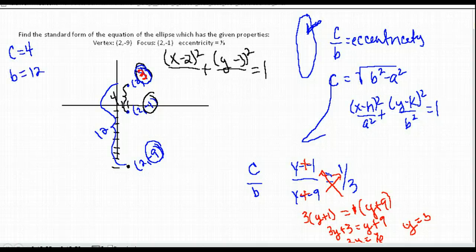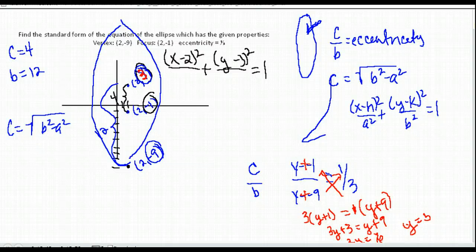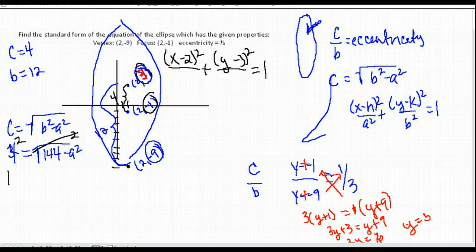With C = 4 and B = 12, we use C = √(B² − A²) for a vertical ellipse. So 4 = √(144 − A²). Squaring both sides: 16 = 144 − A².